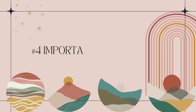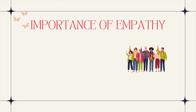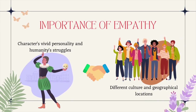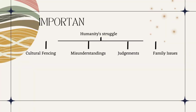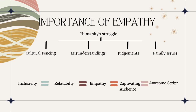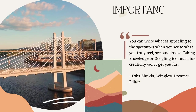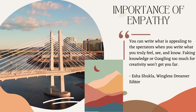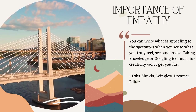This brings us to our next factor — Number 4: The Importance of Empathy. You need to write characters where everyone can identify with humanity's struggle, which adds truth to your writing no matter what genre you choose. Write characters with different personalities so that people, despite their cultural and geographical differences, can relate to them. Obstacles exist in everyone's life in different forms — culture clashing, family issues, misunderstandings, judgments — and can be portrayed in the movie. Write something that feels true to you; only then will you find your creative outlet on screen. Faking knowledge or over-researching for creativity won't get you far.